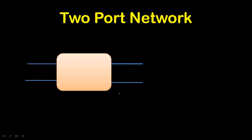Before starting — that means before we establish the small signal hybrid model of BJT — we need some discussion regarding the two-port network. In a small signal model, we are going to represent the transistor by using the two-port network. A two-port network means it is a four-terminal network with an input side and an output side.